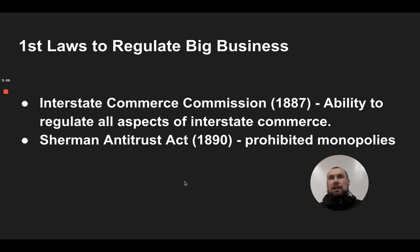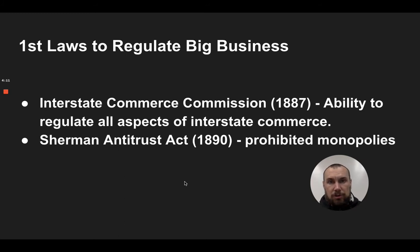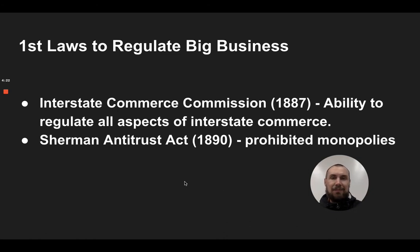There were some government reactions we need to know because they build into the progressive movement. You get the Interstate Commerce Commission, basically able to regulate aspects of interstate commerce — the railroads going from state to state — helping to control prices for farmers. You also get the Sherman Antitrust Act, which prohibits monopolies, but neither was effectively enforced. This made them inefficient at getting a lot done, but it was a step in the right direction — or as we'd say, progress.